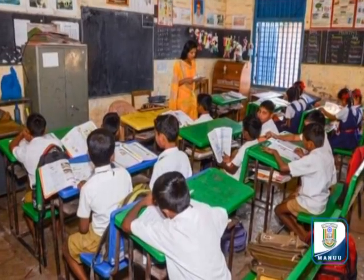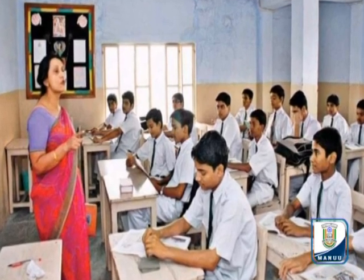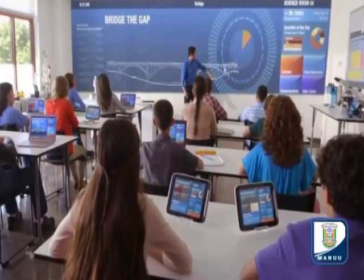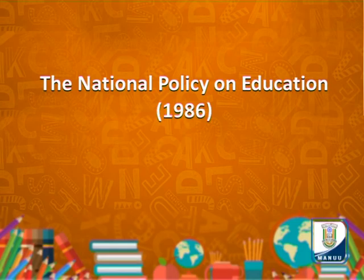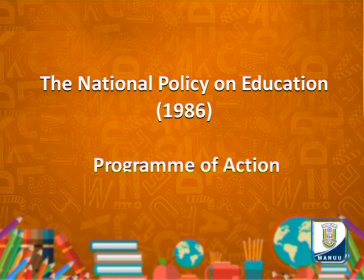Today, most of the provinces of the country follow the three-language formula in their educational system. In most states of India, English is taught as a compulsory subject from standard one to graduation, and Indians learn English as a second language. The National Policy on Education 1986 and its revision Programme of Action 1992 presented a detailed report regarding the three-language formula, improvements in linguistic competencies at different stages of education, provision of facilities for the study of English and other foreign languages, and development of Hindi as a link language.